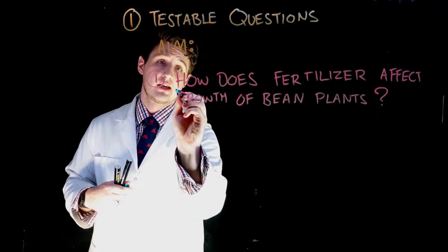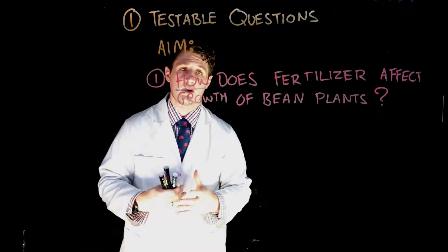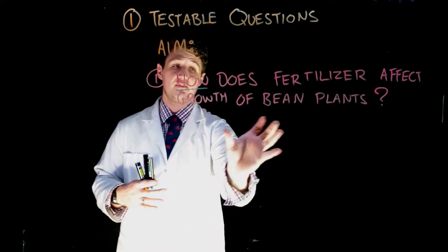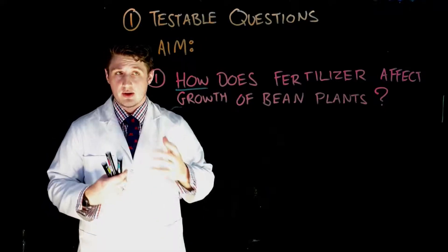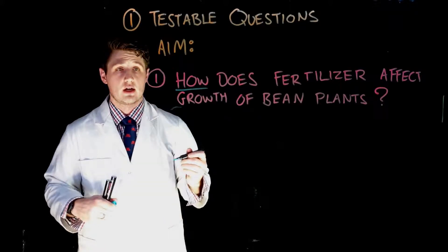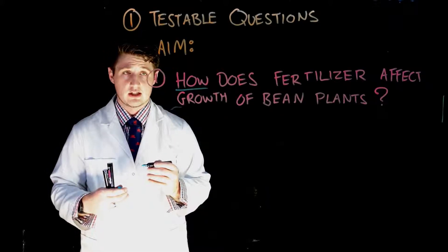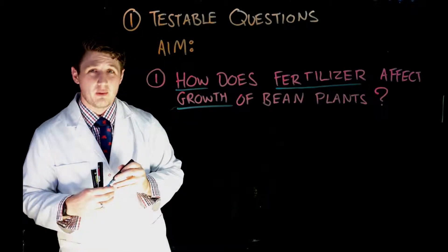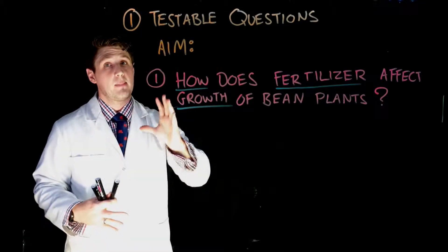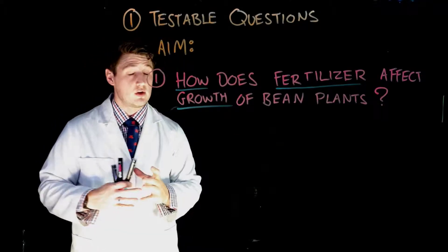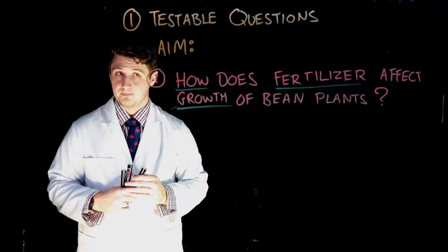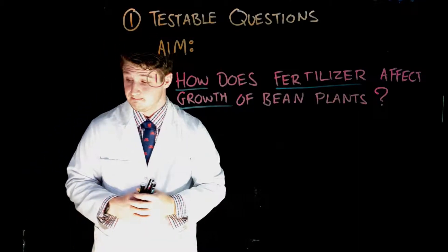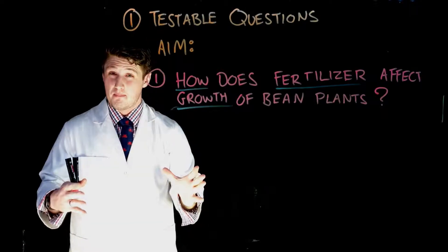What are the characteristics of a testable question? First, they are often 'how' or 'what' questions — but specifically 'how does something affect something' or 'what is the effect of something on something else.' This leads us to the other key aspect: testable questions involve one thing affecting another thing. That word 'thing' is a word we don't like to use in science — I'll be developing it into the word 'variable' very soon. So it's how does one thing affect another thing of an object or a test subject.